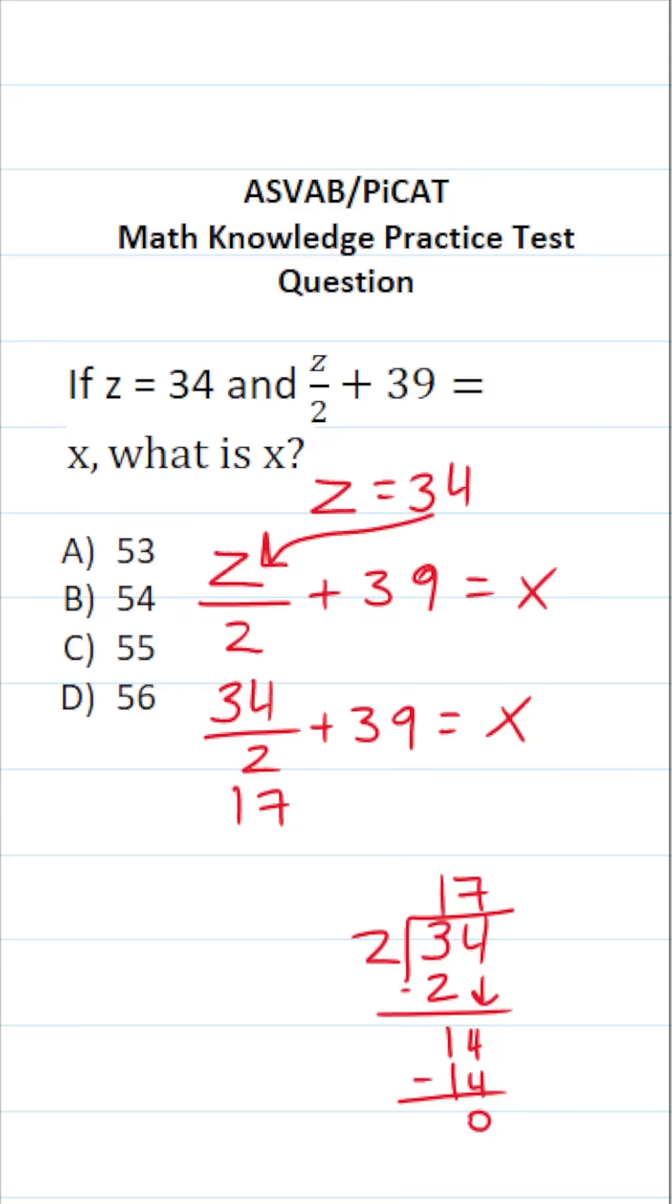This becomes 17 plus 39 equals x. Clearly to know what x is, all we have to do is add 17 and 39. And if you can't do that mentally, there's no shame in doing it off to the side.